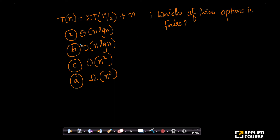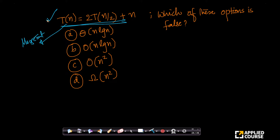This is an interesting question. Imagine we have a recurrence relation like this. We have seen this recurrence relation before — this is the recurrence relation of merge sort. The question here is: which of these options is false?